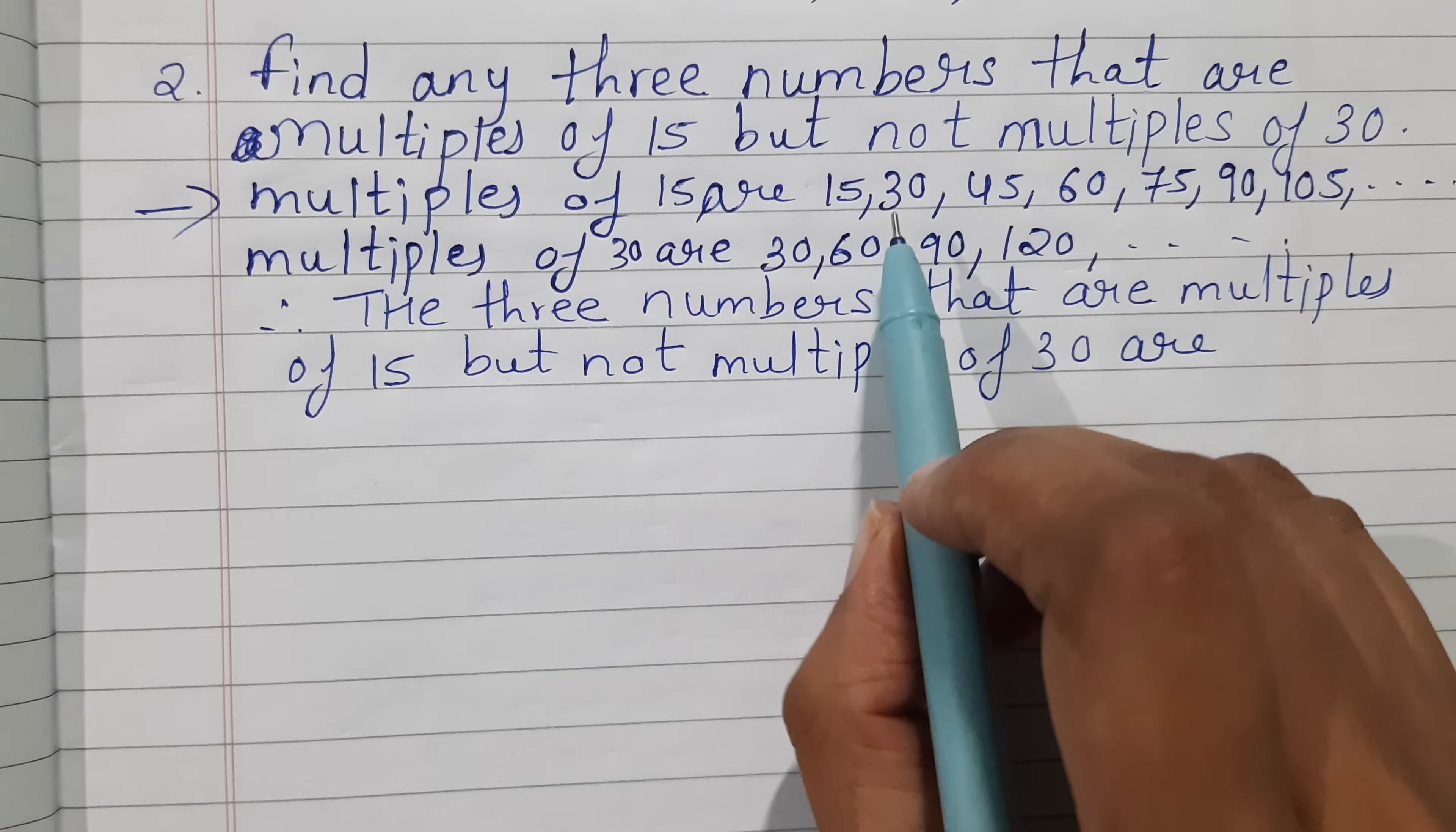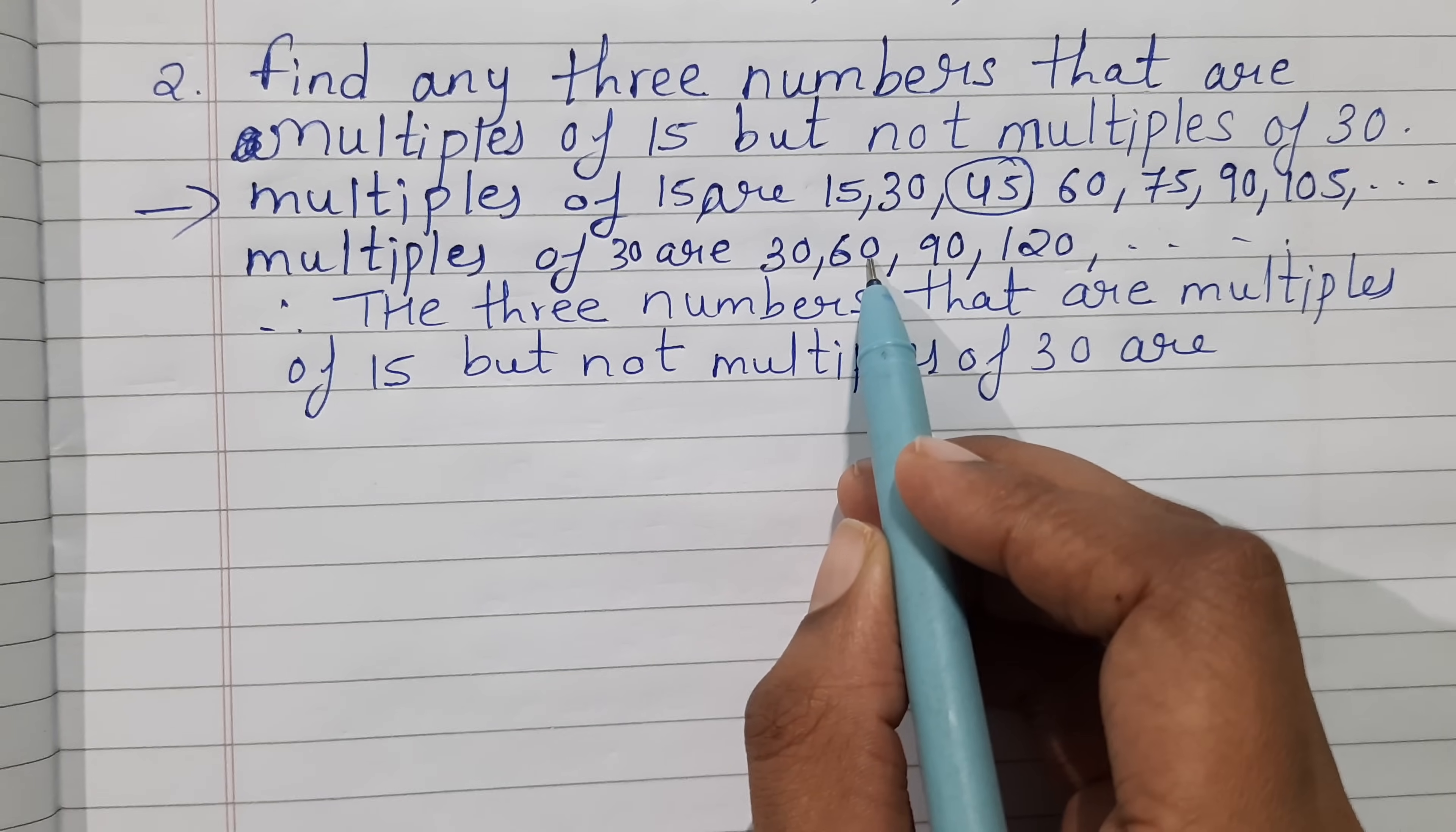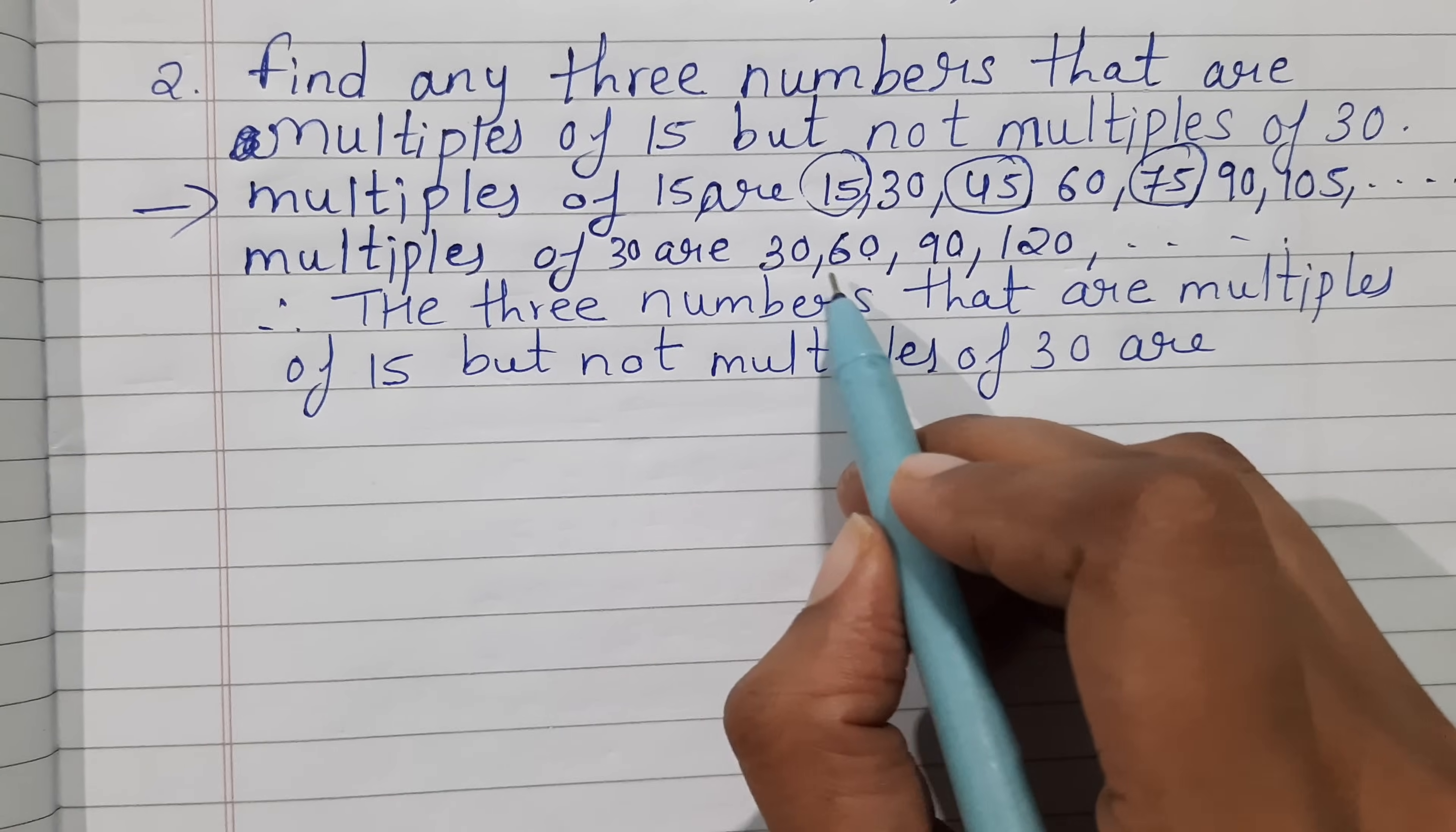Now you have to see which are multiples of 15 but not multiples of 30. So 45 - can you see, after 30 you directly get 60. And then 75 - you don't get 75, you get 90 directly. And 15 itself, which you are not able to find in the table of 30.